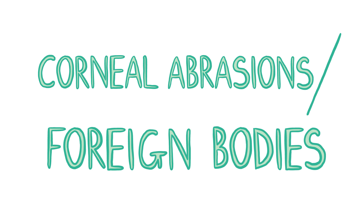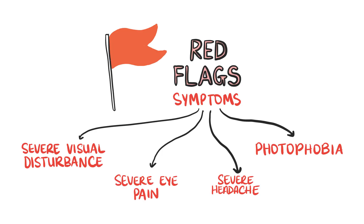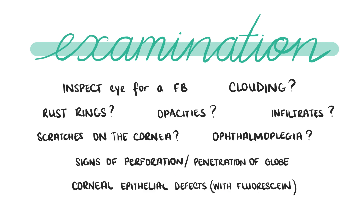In the history there will often be a cause evident, such as difficult insertion or removal of a contact lens, an object striking the eye, or an object entering the eye. Ask about red flag symptoms such as significant visual disturbance, severe eye pain, and severe headache or photophobia. On examination, use a white light to look for a foreign body on the ocular surface and in the inner eyelids. Also look for clouding, opacities, or infiltrates in the cornea which may indicate chemical injury, corneal ulcer, or infection. Other signs of corneal foreign body include linear vertical scratches on the cornea due to subtarsal foreign bodies moving with blinking, and rust rings if the foreign body is metallic.